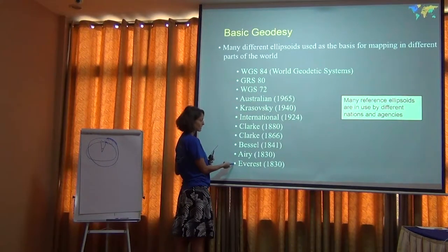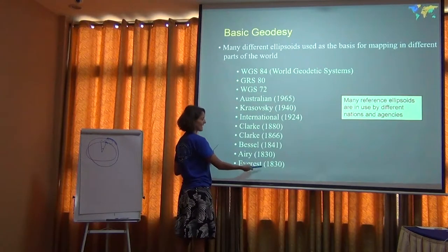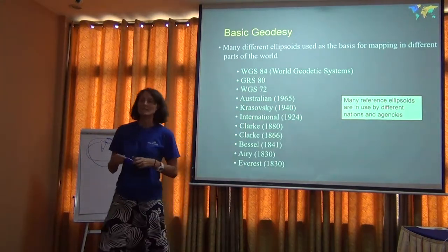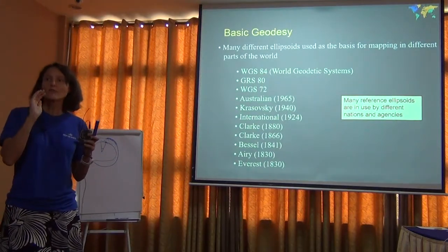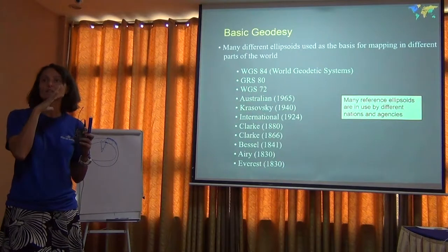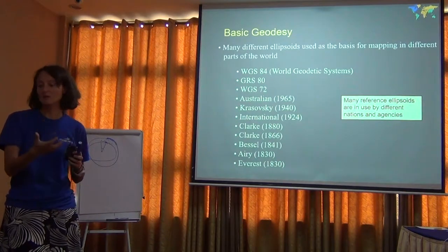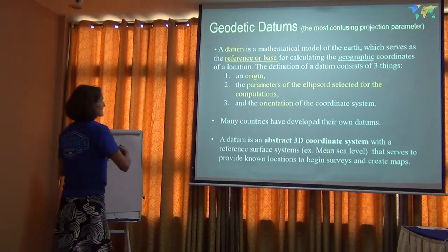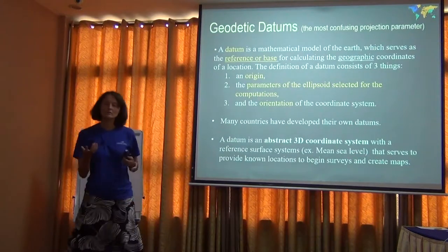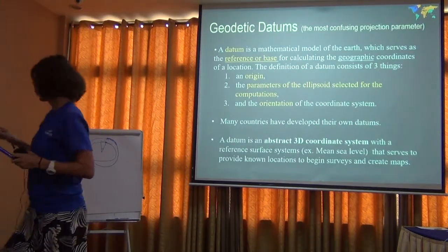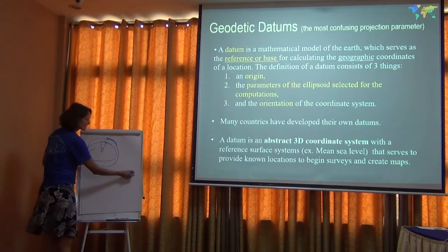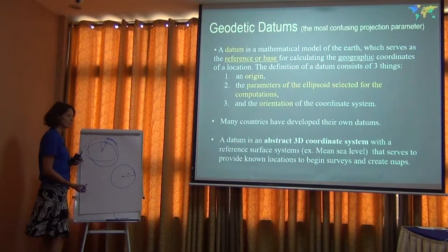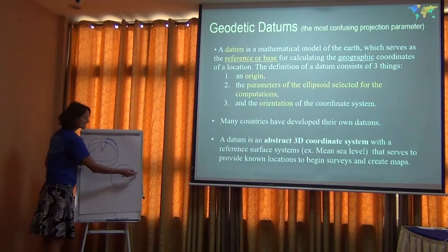If you want to plot data around Everest, you'd pick one datum; if it's Australia, you'd pick another. It's a 3D model of that location that does a really good job there. If the Earth were a sphere, you'd only need one parameter — the radius. If you say the Earth is an ellipsoid, you need two parameters: A and B. You can also change where the origin is and the orientation of the ellipse to best approximate the shape of the 3D Earth.